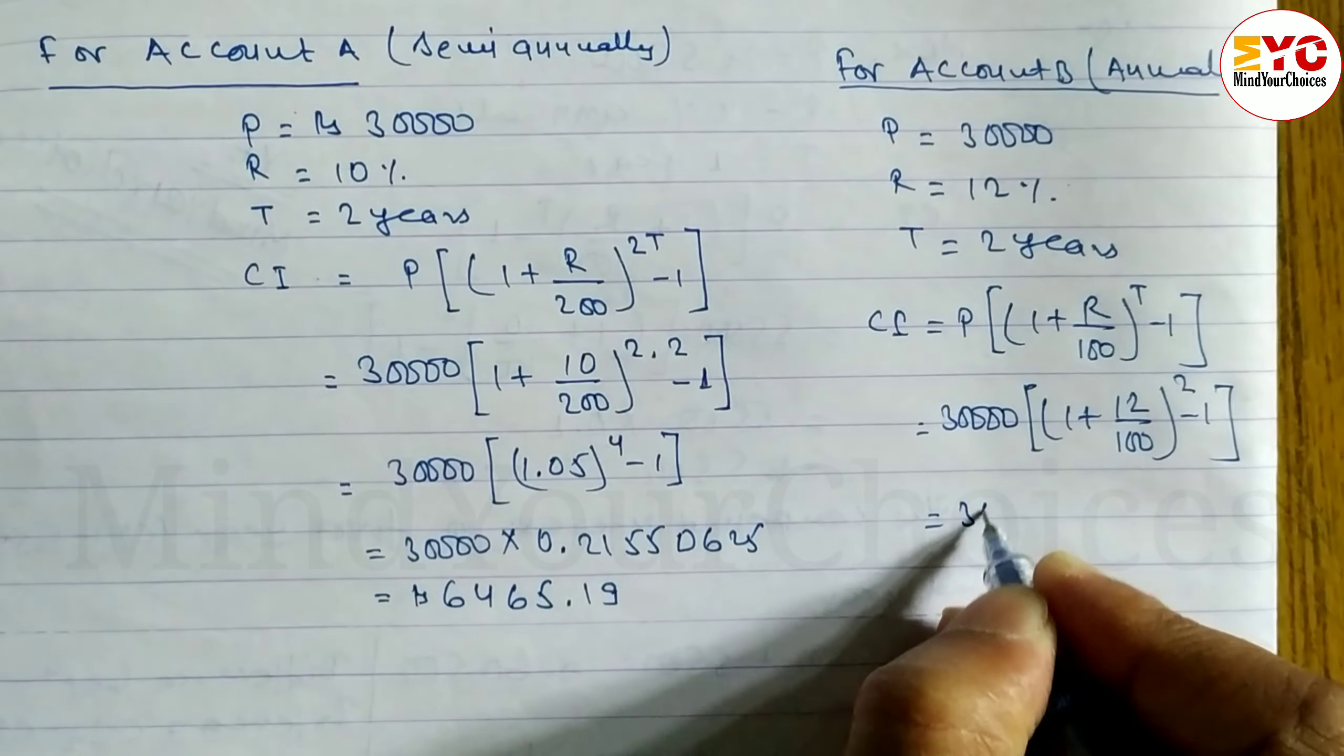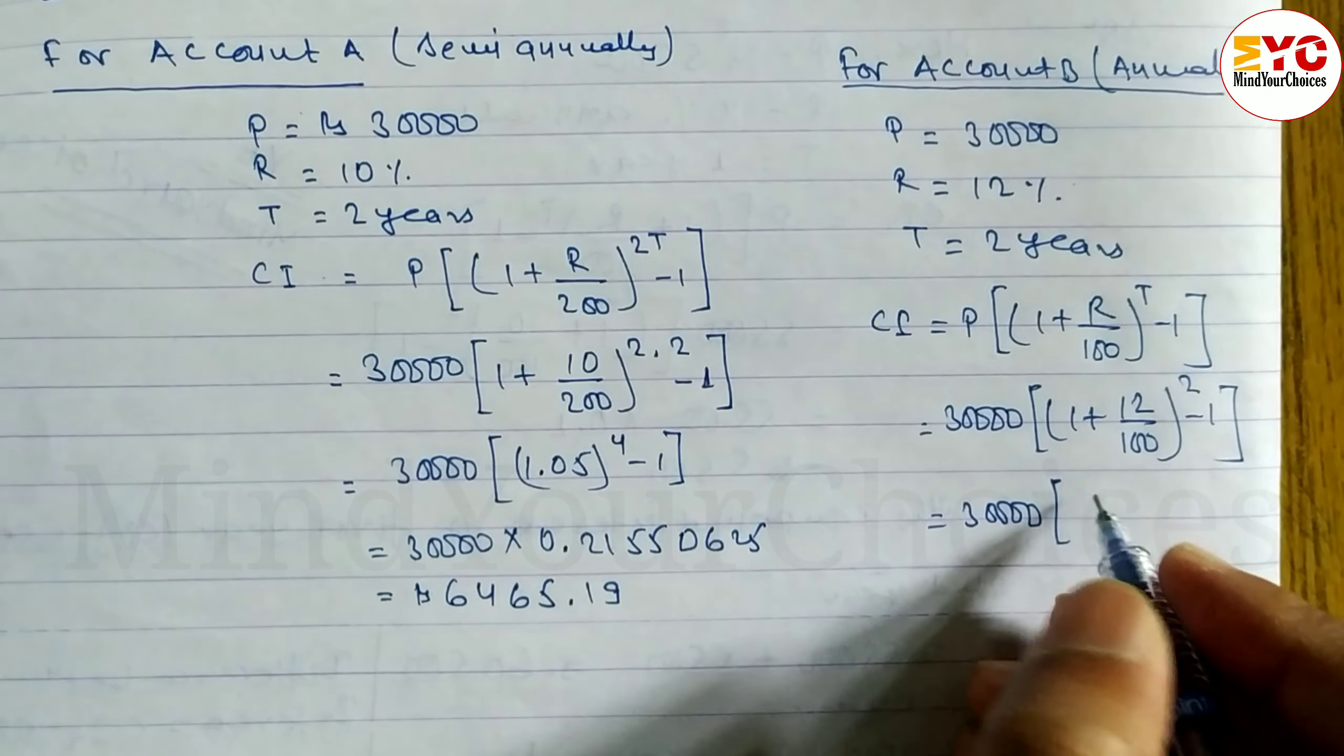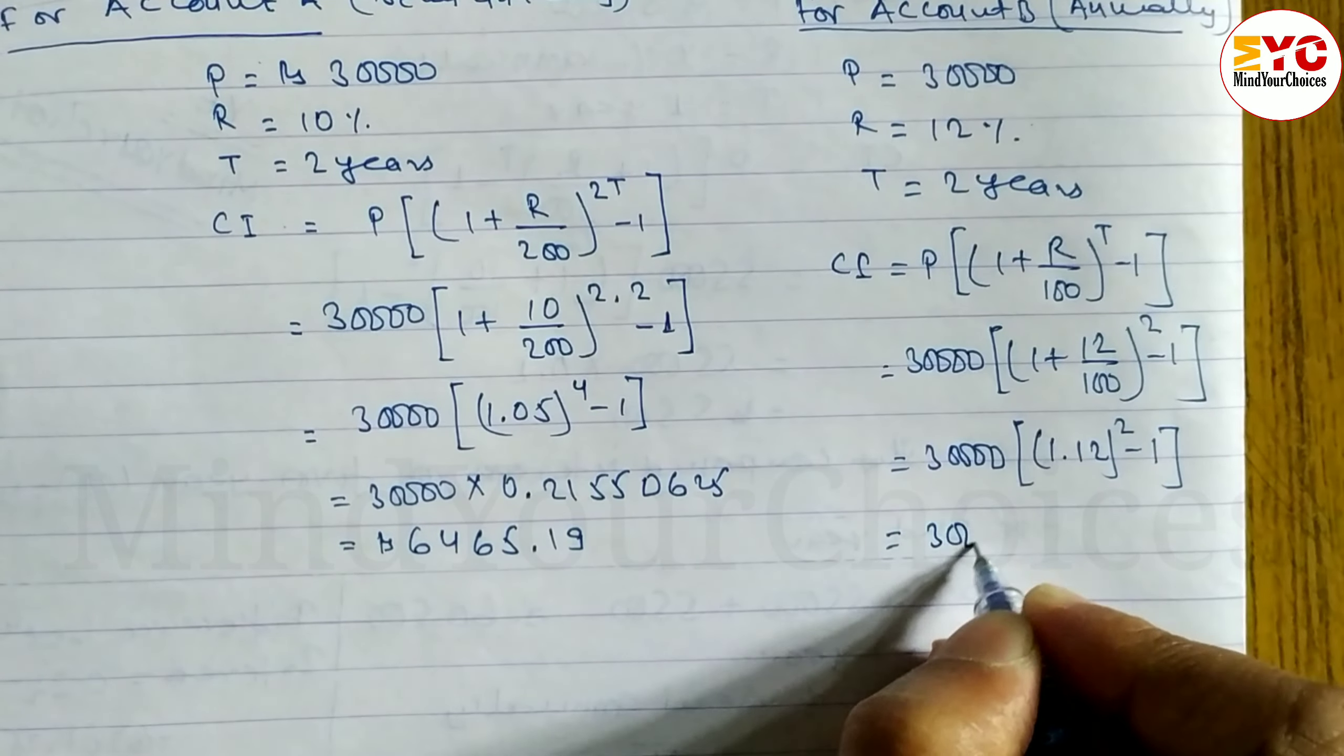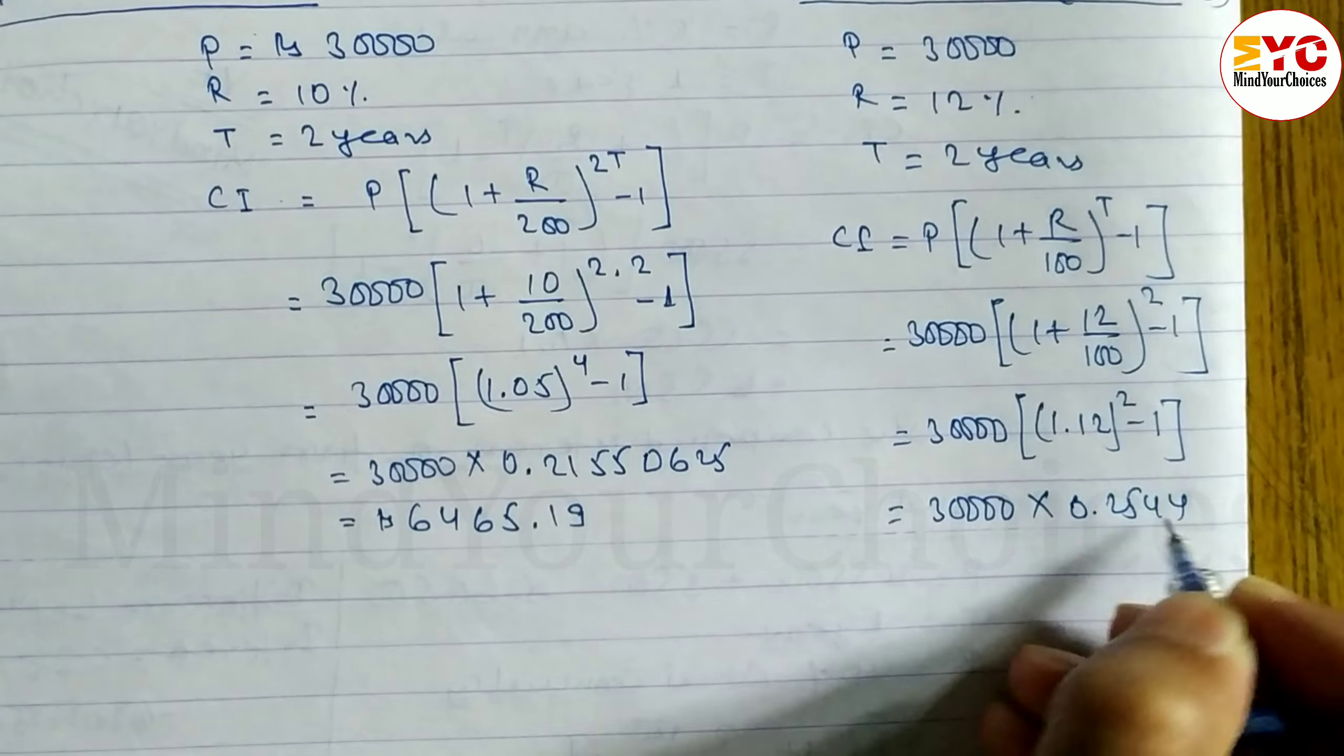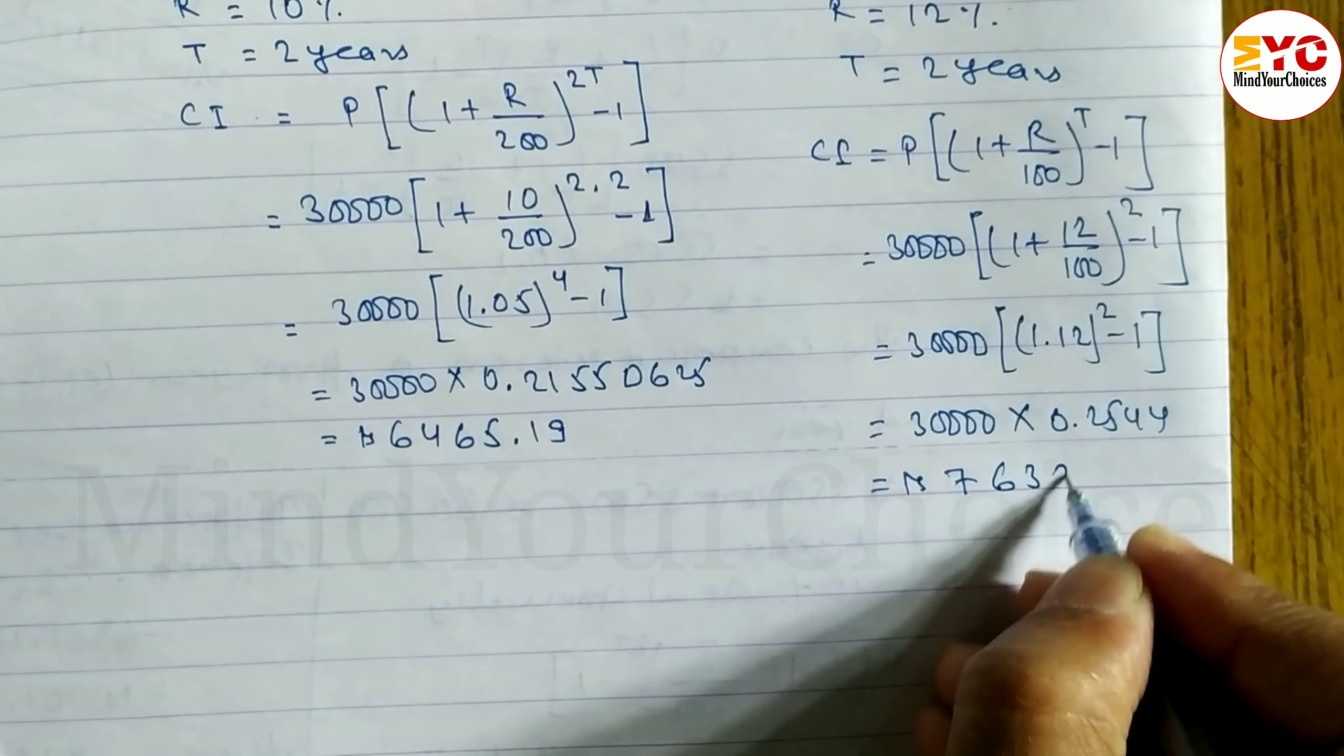Just calculate here. 30,000. 12 by 100 means 0.12 plus 1, 1.12. So write down here 1.12 power T minus 1. 30,000 into 1.12 squared minus 1, you get 0.2544. And when you multiply, you will get here 7,632.